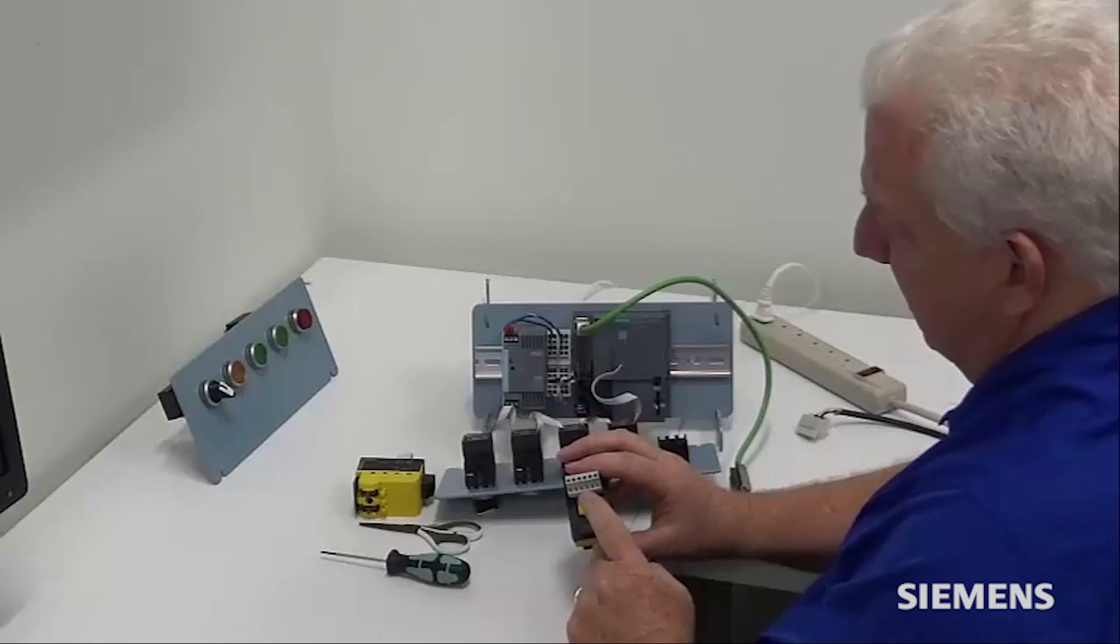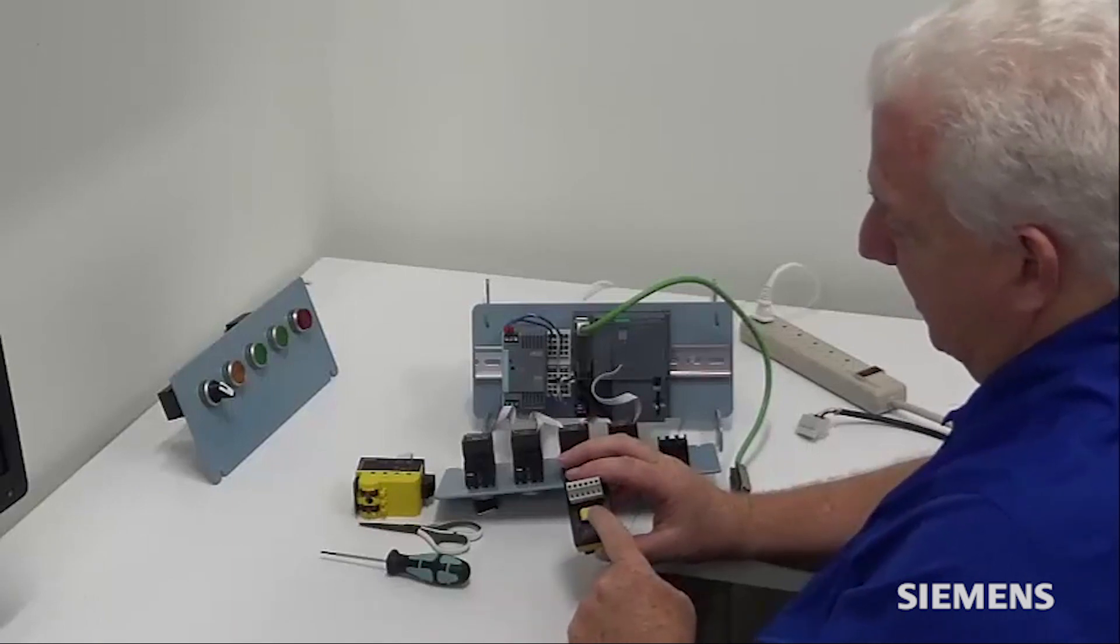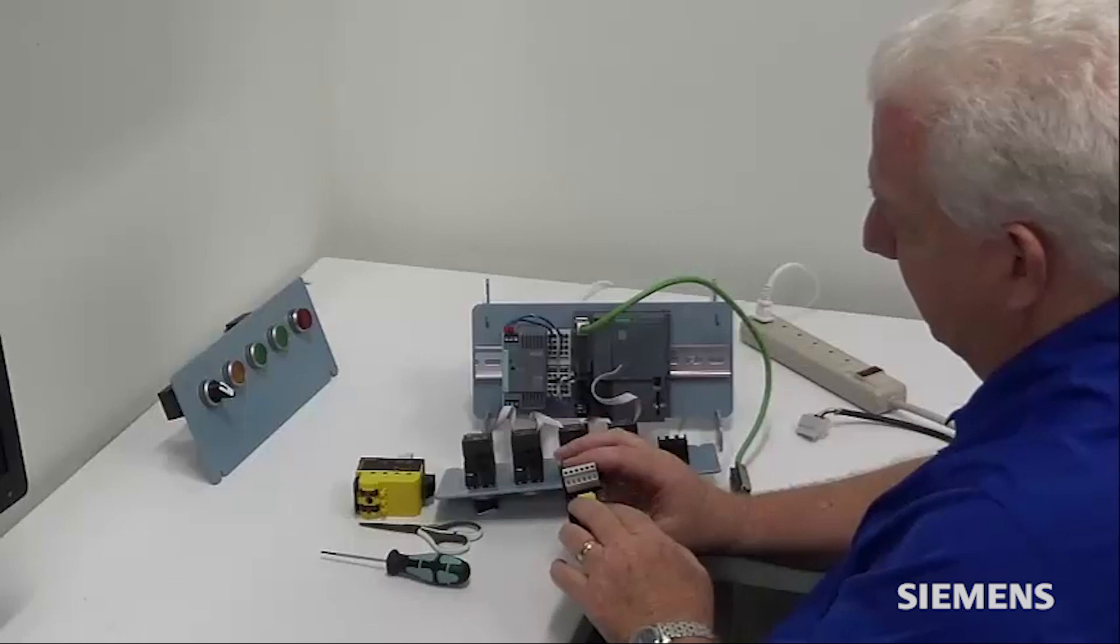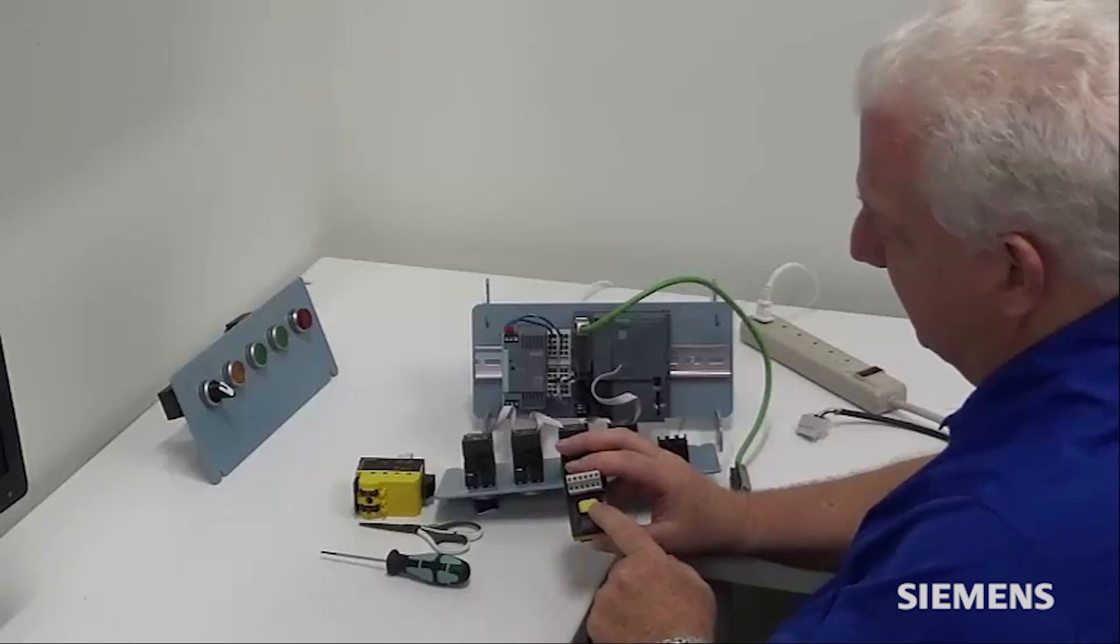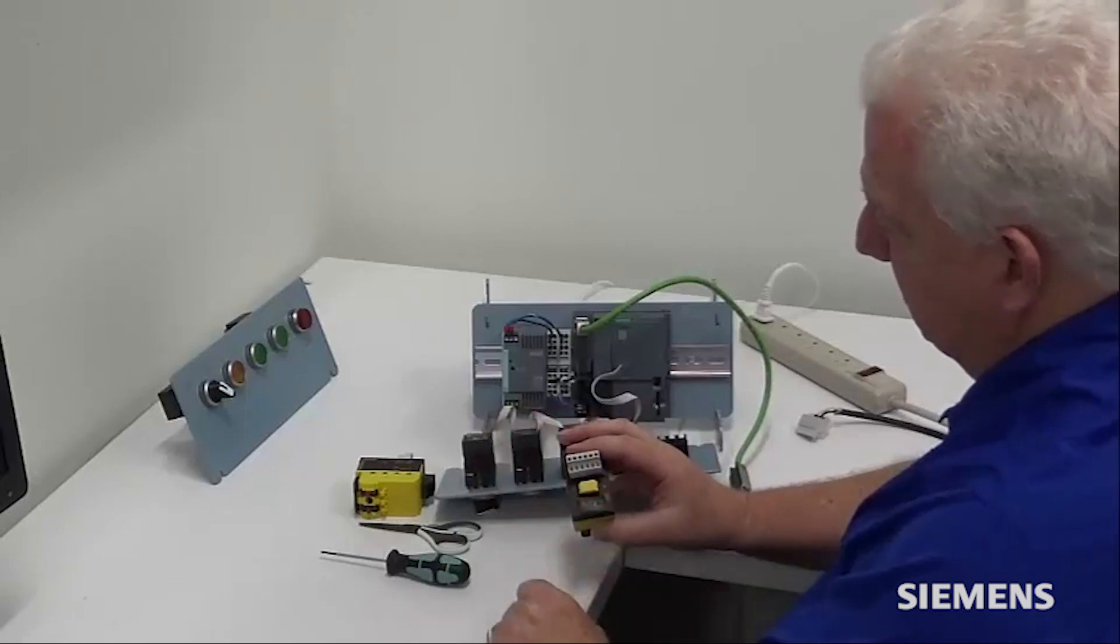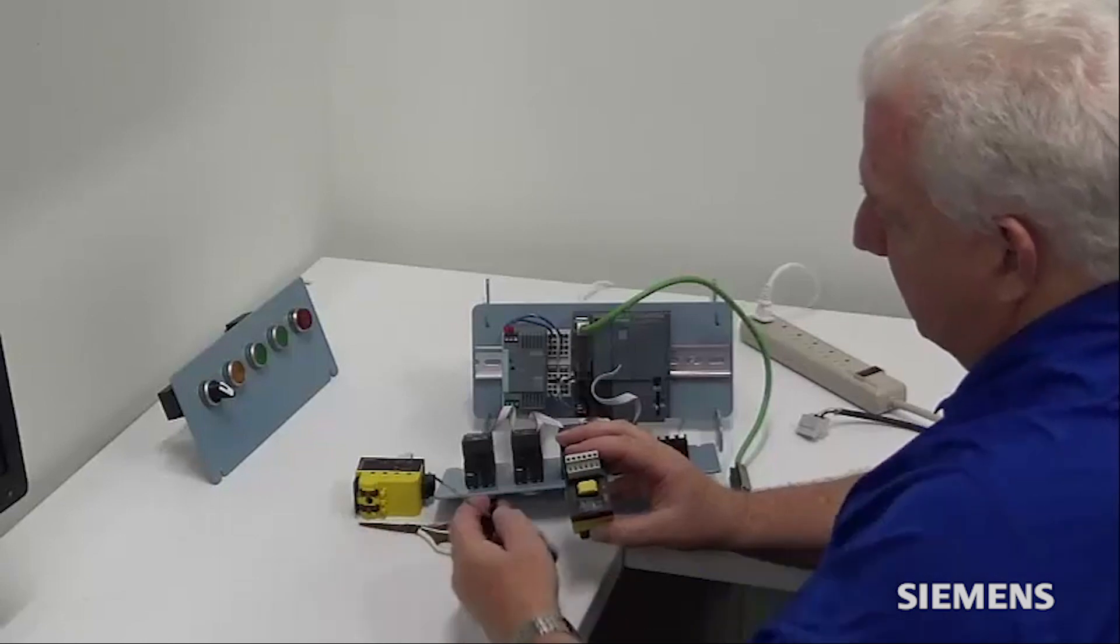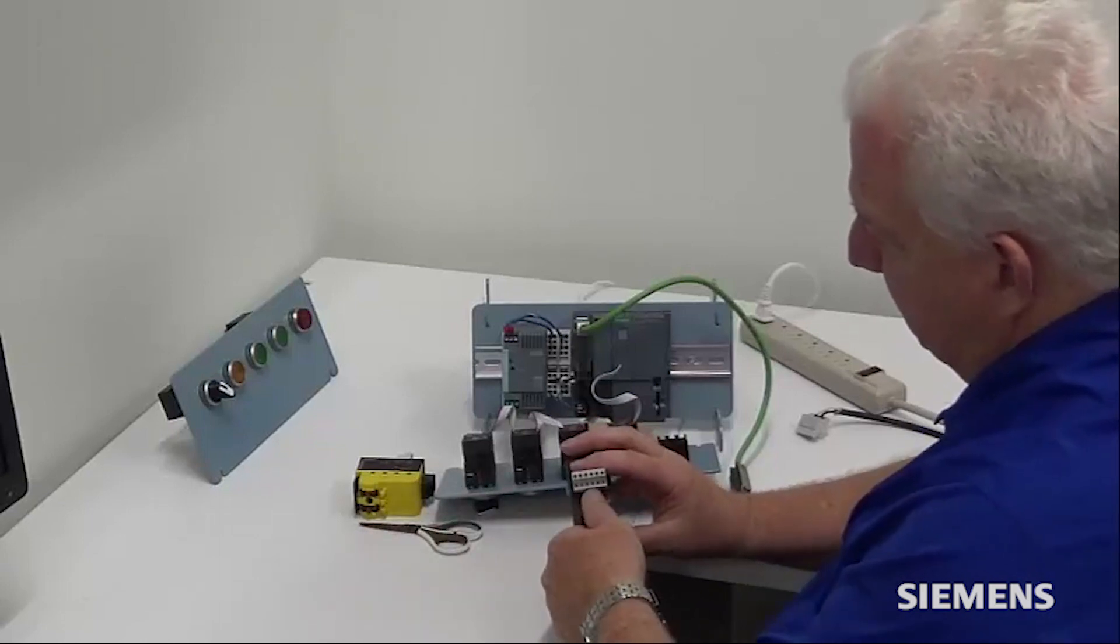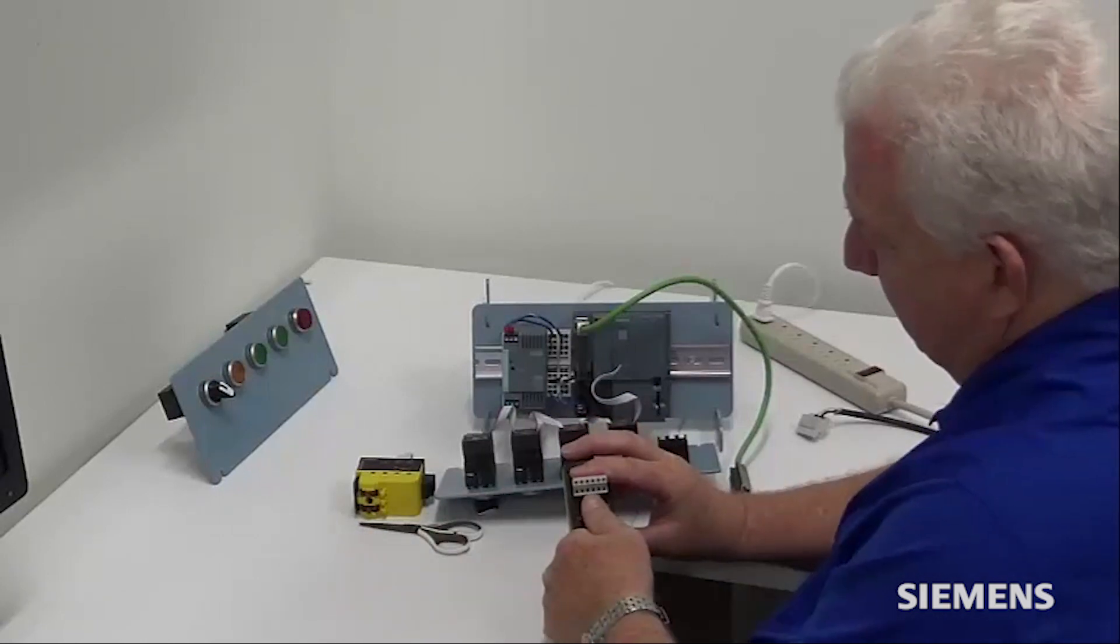Next thing you want to do is you need to be able to replace this EEPROM module which stores the Profinet address and all of the configuration for this system including the ProfiSafe address and insert it into your replacement module. So you can use a small screwdriver to remove that EEPROM from the system.